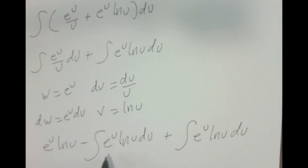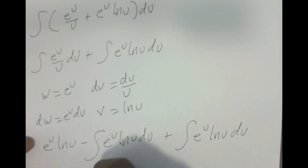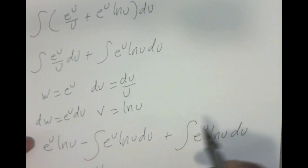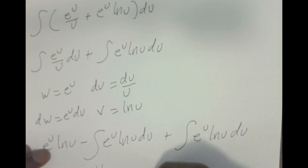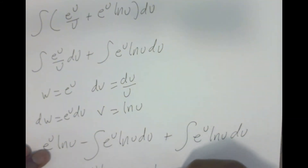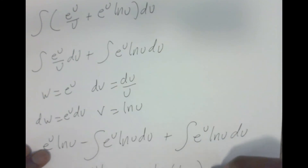When you look at it, those two integrals — minus the integral of e^U · ln U · DU and plus the integral of e^U · ln U · DU — cancel each other out. This simply leaves us with e^U · ln U. Since U = ln x, this is e^(ln x) · ln(ln x), which equals x · ln(ln x) plus a constant.